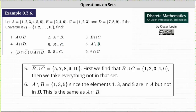Number six, we have A minus B. This is the set containing the elements in A but not in B. Analyzing set A and set B, the elements in A but not in B are 1, 3, and 5. So A minus B is the set containing 1, 3, 5. This is the same as A intersect B complement.